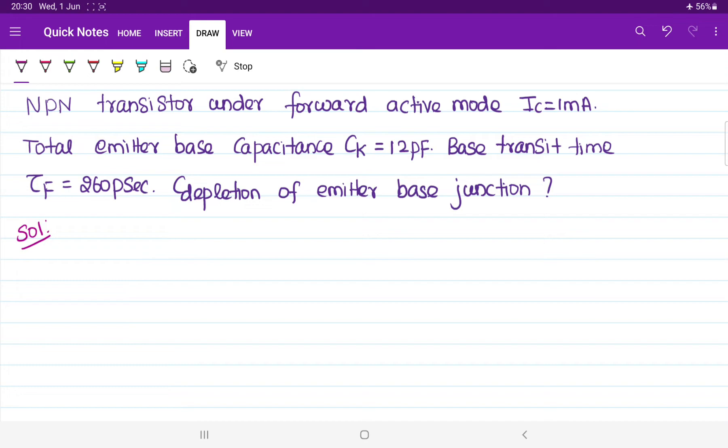Now, if you observe this question, given it is NPN transistor under forward active mode, collector current IC is clearly given, just observe it. Collector current IC is 1 milliampere. Total emitter base capacitance is given as CK. They are treating it as total emitter to base capacitance is 12 picofarad.